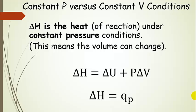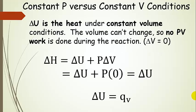This does mean that the volume can change. On the other hand, delta U is the heat under constant volume conditions. Basically, if the volume can't change — if delta V is zero — then that change in volume is zero. Put zero in there, and that makes this whole term zero. So we just end up with delta U, and that is the heat at constant volume. Under constant volume conditions, delta U gives us that quantity.